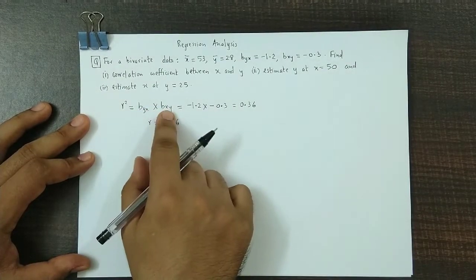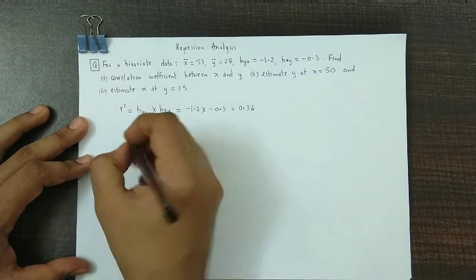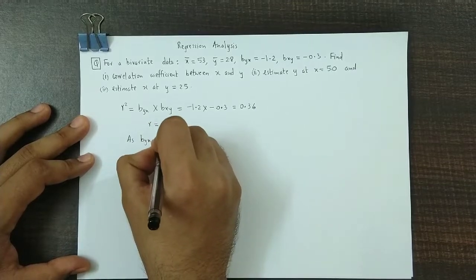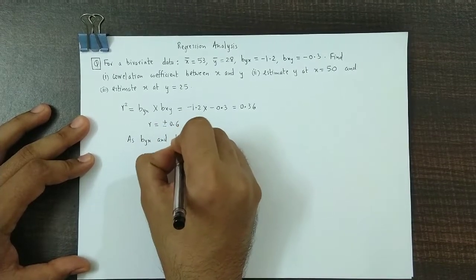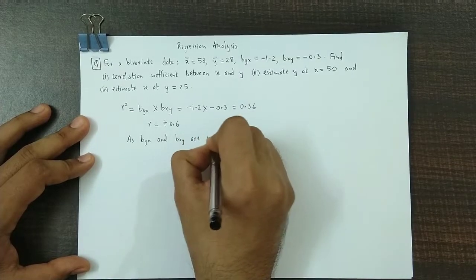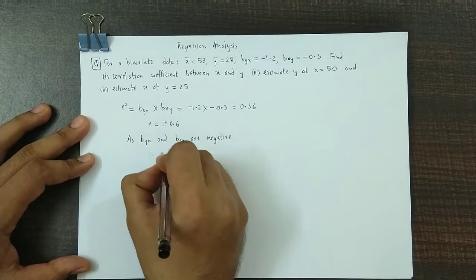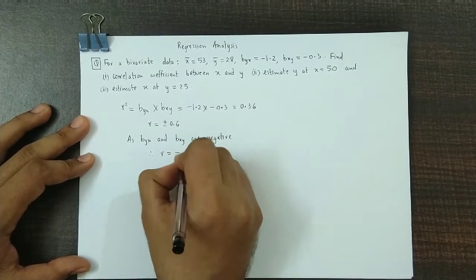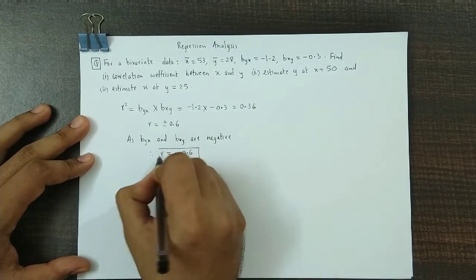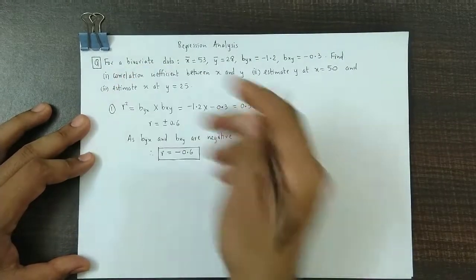As the regression coefficients are negative, the value for r is also negative. Since byx and bxy are both negative, therefore the value for r will be minus 0.6. This is how you obtain the value for r, that is the correlation coefficient. This is step number 1.